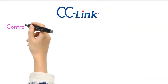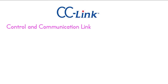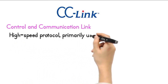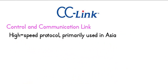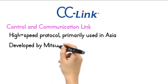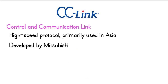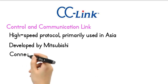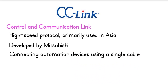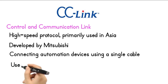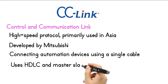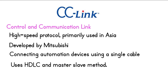CC-Link, or Control and Communication Link, is a high-speed protocol primarily used in Asia. It is developed by Mitsubishi for data communication in industrial automation. CC-Link is a network protocol connecting automation devices using a single cable. It uses high-level data link control, HDLC, and the master-slave method.